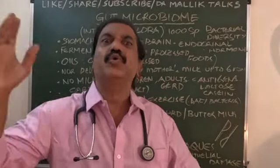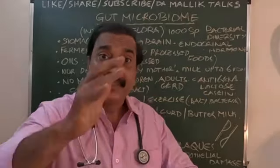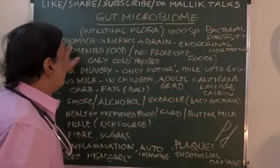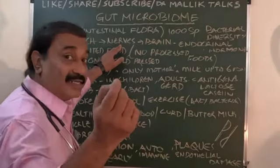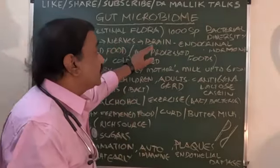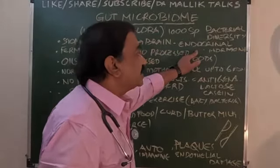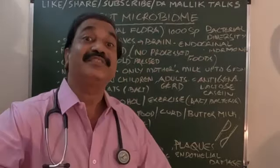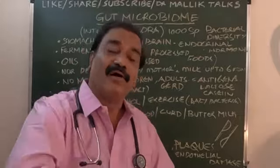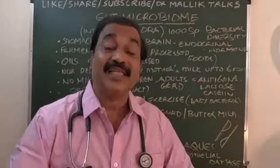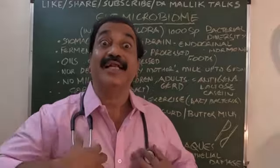These gut microorganisms produce and stimulate so many hormones. For example, from the stomach there are nerve endings which stimulate the brain and which release endocrinal hormones. They stimulate the brain and in turn cause the release of hormones. This is what is called gut health.